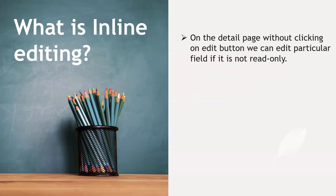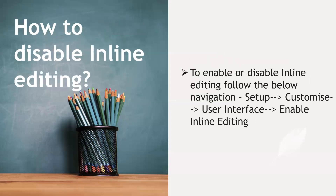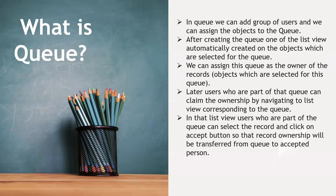What is inline editing? On the detail page, without clicking the Edit button, you can directly edit a particular field — this is called inline editing. To enable or disable inline editing, navigate to Setup, go to Customize, then User Interface, and check or uncheck the Enable Inline Editing option.